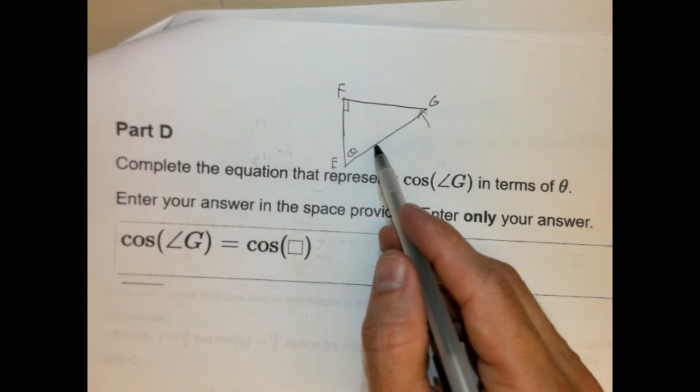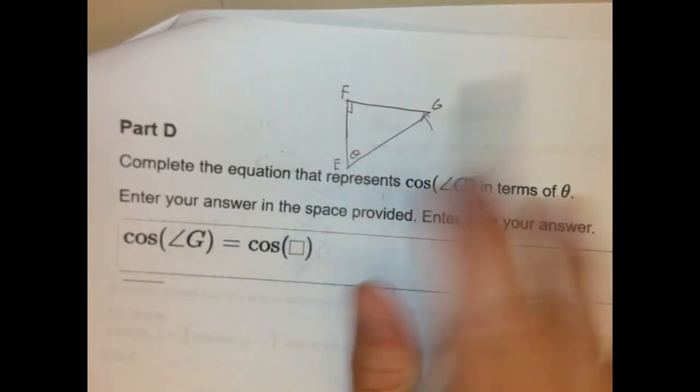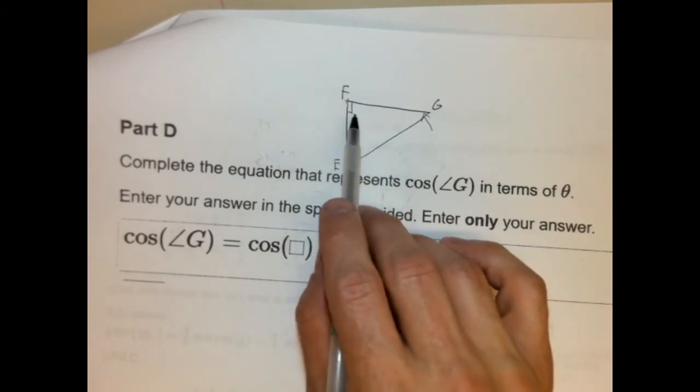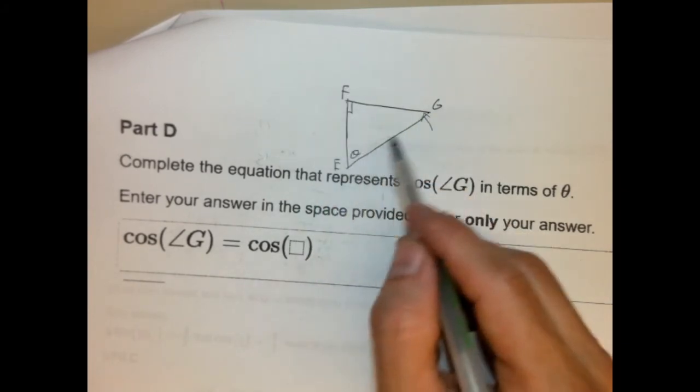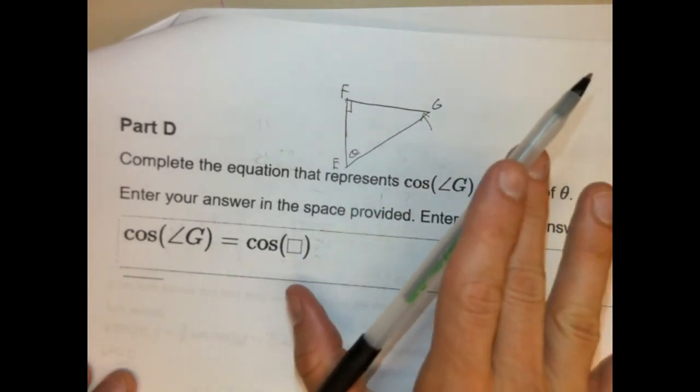All right. So, we know that these two angles are supplementary, right? Sorry, not supplementary. Complementary, rather. They have to add up to 90 degrees because it's a right triangle. We have the 90 degrees. And we know that these two angles, these other ones, have to add up to 90. So, this is how easy this is. It's actually a really, really simple problem.